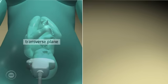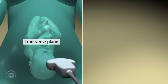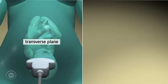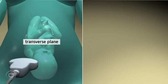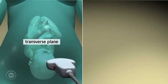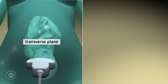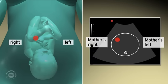When scanning in the transverse plane, the image on screen is like a mirror image. The left side of the mother is represented on the right side of the screen and the right side of the mother is represented on the left side of the screen. Again, the location of the dot on the screen should correspond.